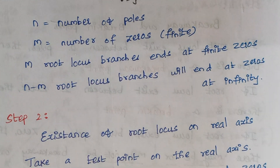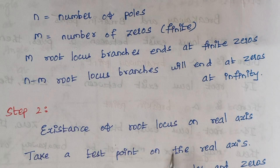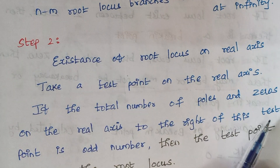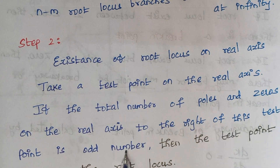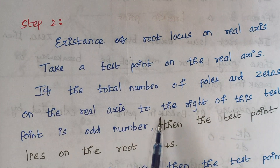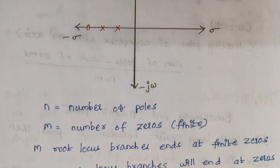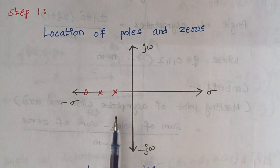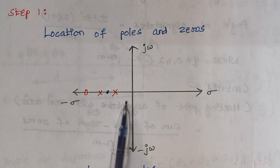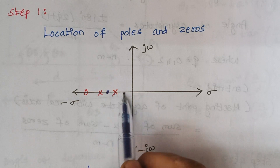Step 2 is existence of root locus on the real axis. We have to check whether the root locus exists on the real axis by considering a test point. If the total number of poles and zeros to the right of this test point is an odd number, then the test point lies on the root locus; otherwise it does not. For example, if a test point has only one pole to its right, root locus exists from the origin to that test point.